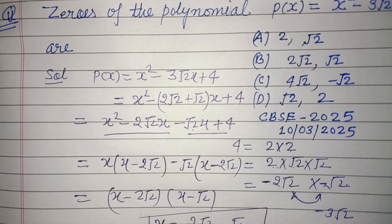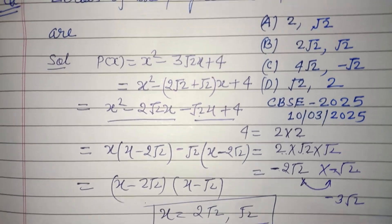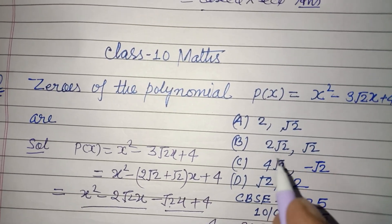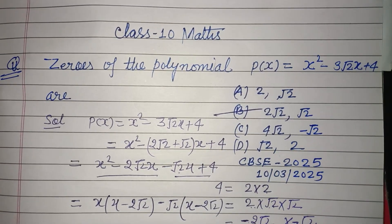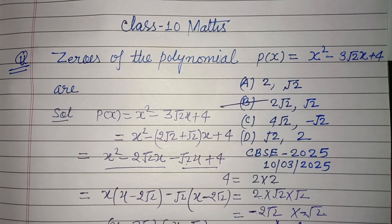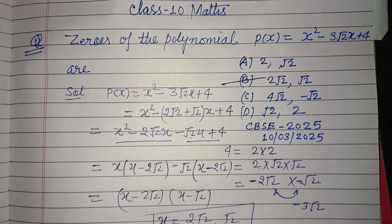So these are the zeros of the given polynomial: 2√2 and √2. B is the correct answer of this question. I hope you got it, please like the video and subscribe to the channel, thanks for watching.